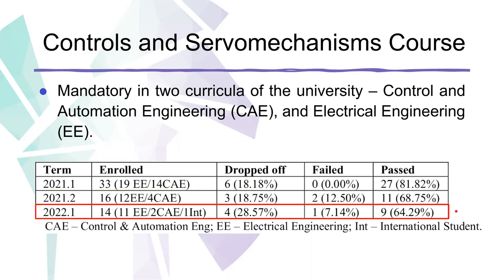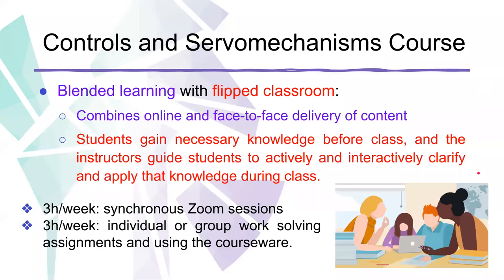This course is mandatory for students of electrical engineering and control and automation engineering. The course is taught in blended learning with flipped classroom, which means that the course combines online and face-to-face delivery of content. Students are required to study the theory before class, and the face-to-face meetings with the professor are for discussions, questions, and solving exercises.